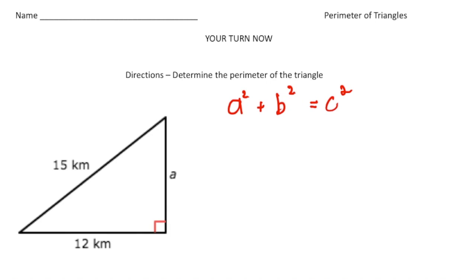All right, welcome back. Let's tell you how you did with this practice problem. So to find the perimeter of this right triangle, we need to first figure out the length of side A. So let's plug in what we know into the theorem so we can solve A.